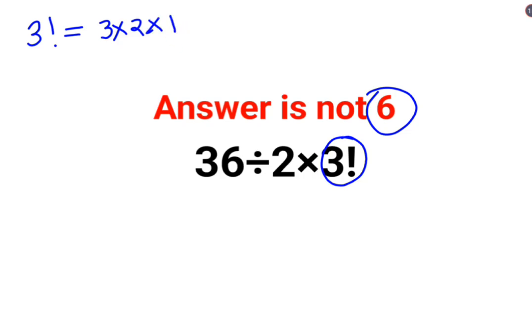Whenever there is a factorial involved, you need to do products of the next numbers in decreasing order. And you will keep doing that until you reach the value of 1. So here for 3 factorial, we know the value is 6.